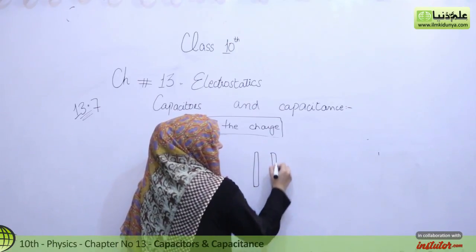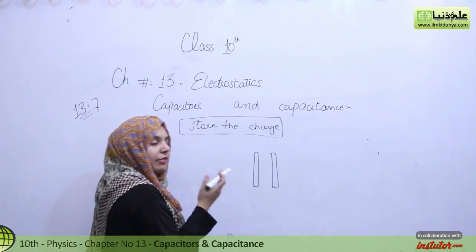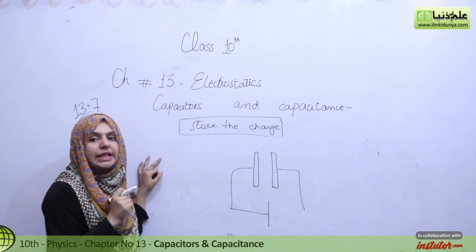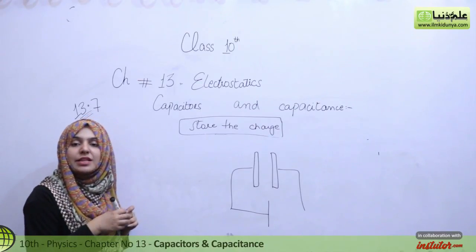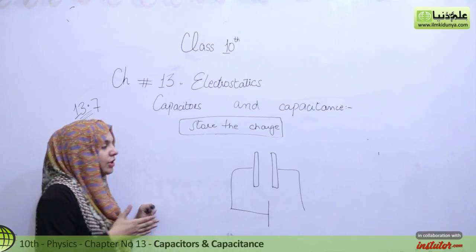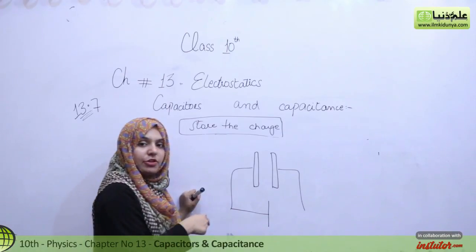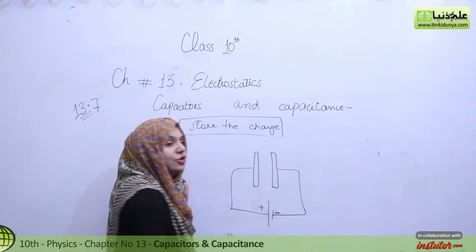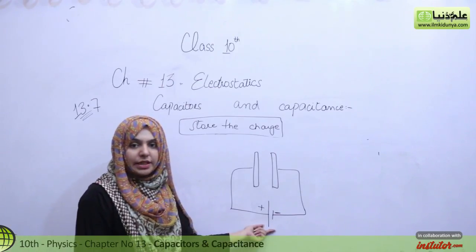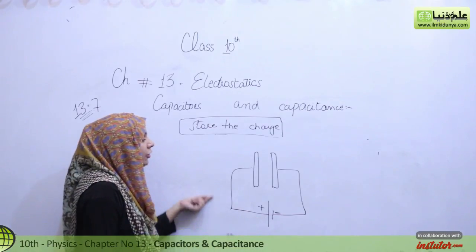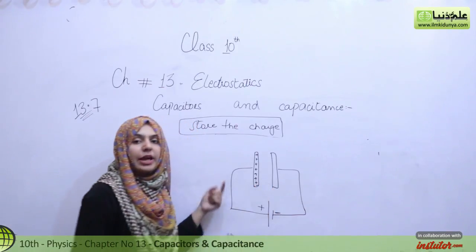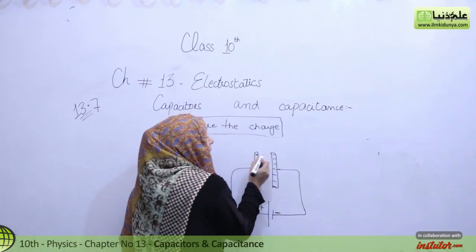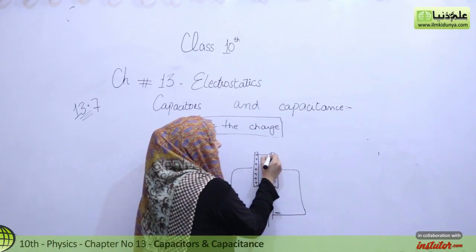Let's suppose we have a capacitor — two thin plates with air as the medium. We connect it to a battery. How do we represent the battery? The big side is positive and the small side is negative. These are wires and this is the symbol of the battery. So this is the way to represent the battery connected to the capacitor.